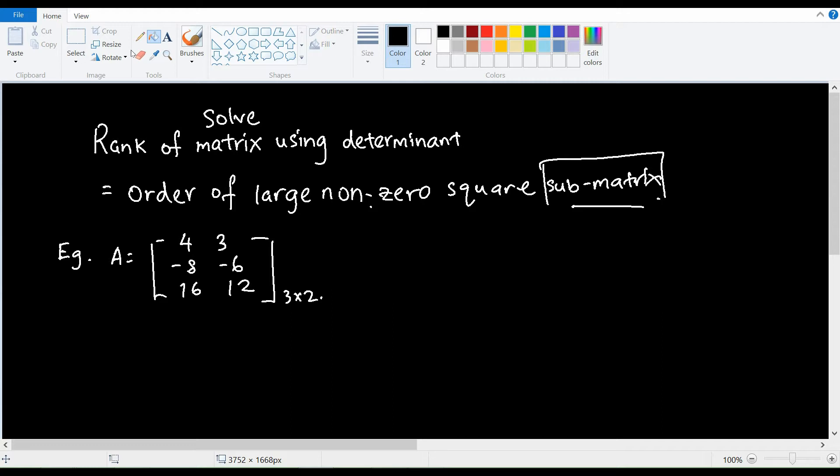So basically the rank of the matrix is the order of a large non-zero square submatrix, and this is an intuitive explanation. It is a little bit difficult to explain this in detail so let me just show you how it is done.